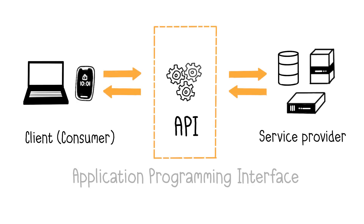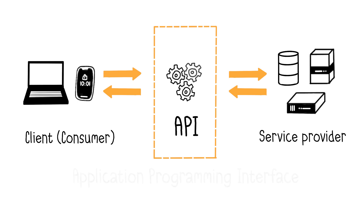API stands for Application Programming Interface, and it is essentially a programming interface that allows access to a service, such as data or features, provided by a third-party system. In this case, we say the third-party system exposes an API.